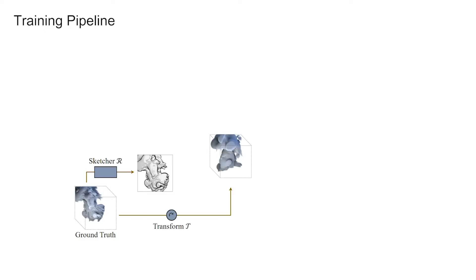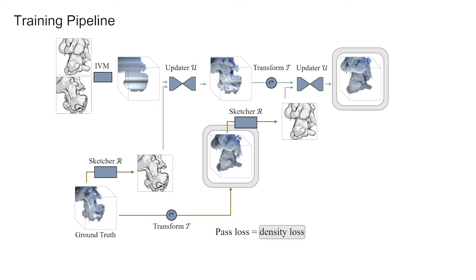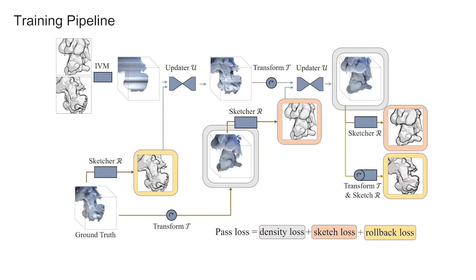During training, our pipeline takes a single density field and generates corresponding sketches on the fly for end-to-end training. At each pass, we pick a random view for training and calculate view-dependent losses. The updater network iteratively refines the reconstructed density. A pass loss is computed on intermediate results to match all target sketches.